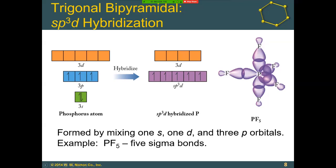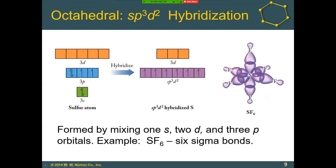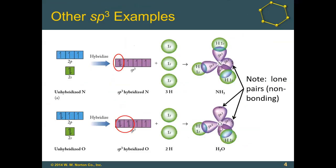Octahedral geometries require six positions for electron pairs, making them sp3d2 hybrids. You can apply hybridization to any electron geometry, even with double bonds. For example, phosphate or sulfate have tetrahedral shapes and are sp3 hybrids.